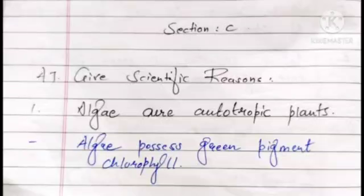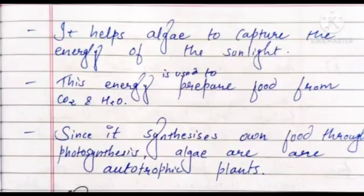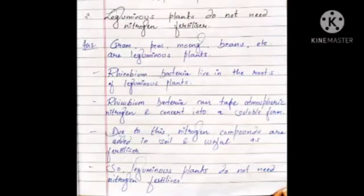Section C: Give scientific reasons. The first one is — algae are autotrophic plants. The answer is: algae possess the green pigment chlorophyll, which helps algae capture the energy of sunlight. This energy is used to prepare food from carbon dioxide and water. Since algae synthesize their own food through photosynthesis, they are autotrophic plants.